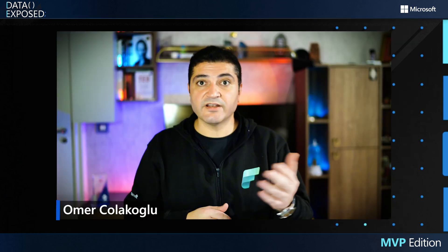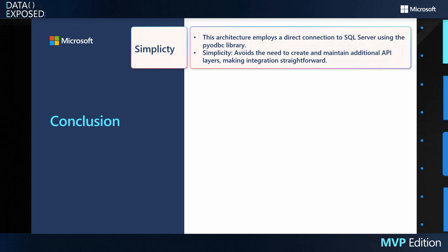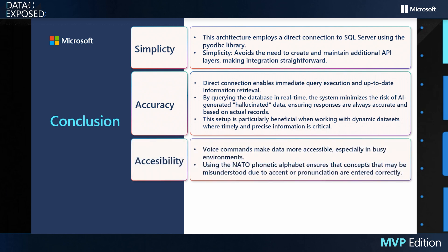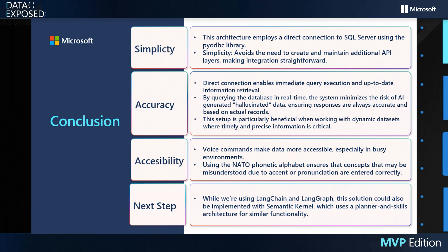This architecture employs a direct connection to SQL Server, avoiding the need to create and maintain additional API layers, making integration straightforward. Direct connection enables real-time query execution and up-to-date information retrieval. By querying the database in real-time, the system minimizes the risk of AI-generated hallucinated data, ensuring responses are always accurate and based on actual records. Voice commands make data more accessible, especially in hands-free environments. Using the NATO phonetic alphabet ensures that codes that may be misunderstood due to accent or pronunciation are entered correctly. While we are using LangChain and LangGraph, this solution could also be implemented with Semantic Kernel, which uses a planner and skills architecture for similar functionality.